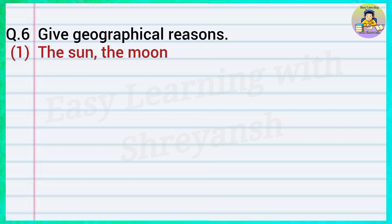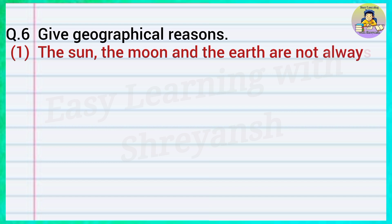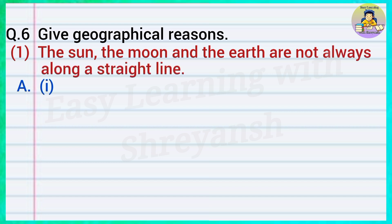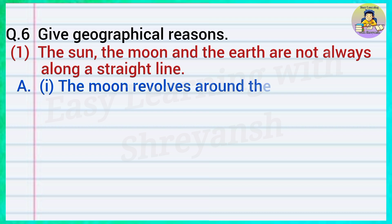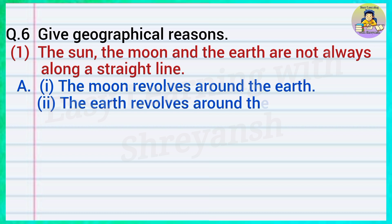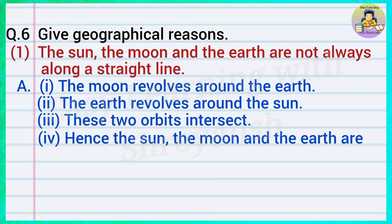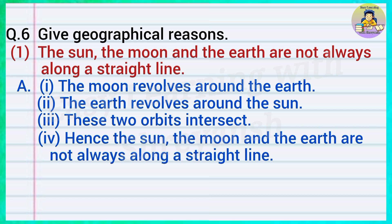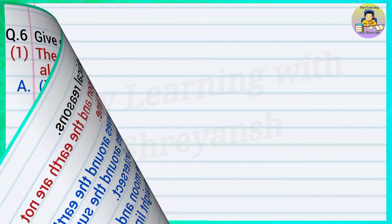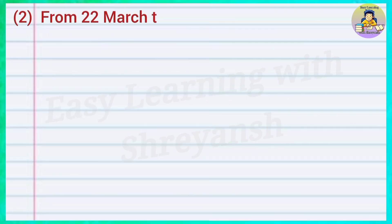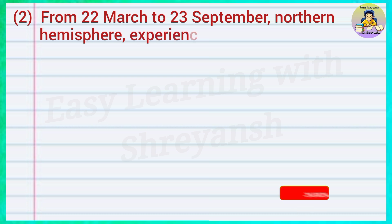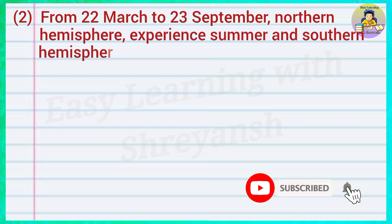Question number six: Give geographical reasons. One: The sun, the moon and the earth are not always along a straight line. Answer: The moon revolves around the earth and the earth revolves around the sun. These two orbits intersect; hence the sun, the moon and the earth are not always along a straight line.